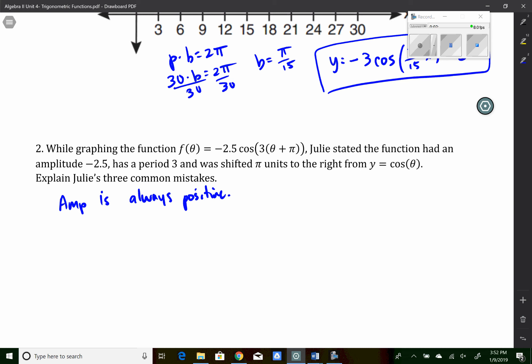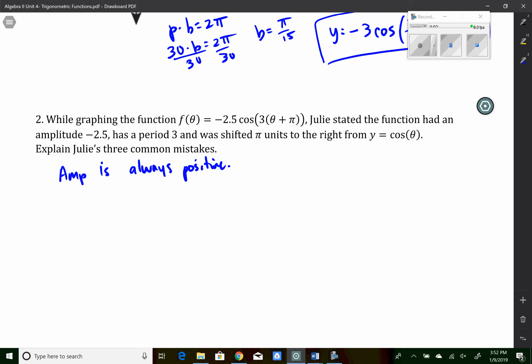The second mistake she has is that the period is 3. Well, the 3 in the equation is the frequency, right? So the frequency is 3. That's what's in my equation here. So the period, if you use the period times frequency equals 2 pi equation, winds up being 2 pi over 3. Very different.